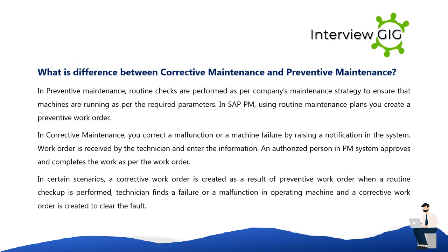What is the difference between corrective maintenance and preventive maintenance? In preventive maintenance, routine checks are performed as per the company's maintenance strategy to ensure that machines are running as per the required parameters. In SAP PM, using routine maintenance plans you create a preventive work order. In corrective maintenance, you correct a malfunction or machine failure by raising a notification in the system; the work order is received by the technician, and an authorized person in PM approves and completes the work as per the work order.